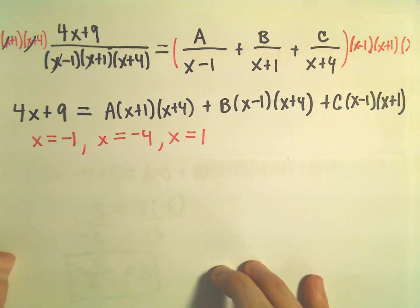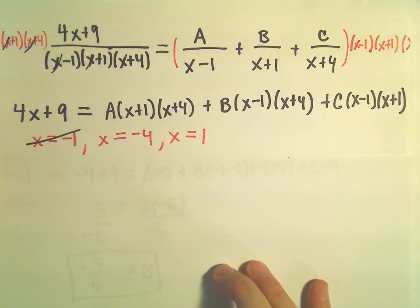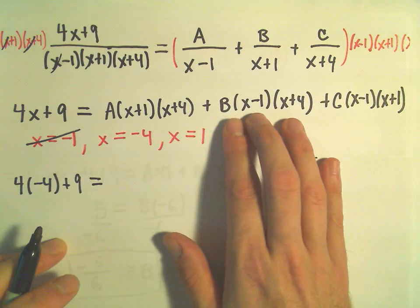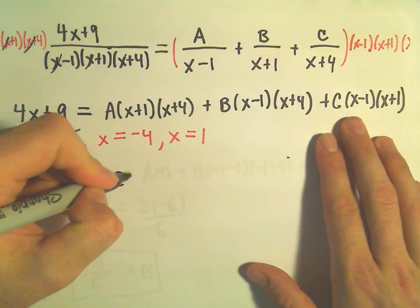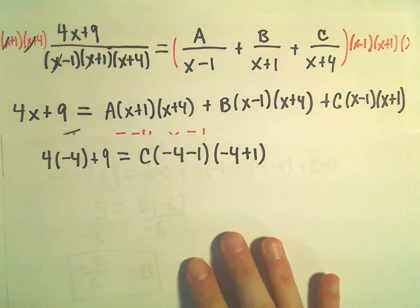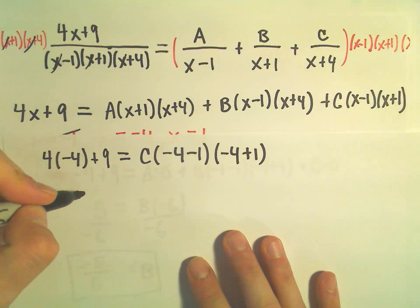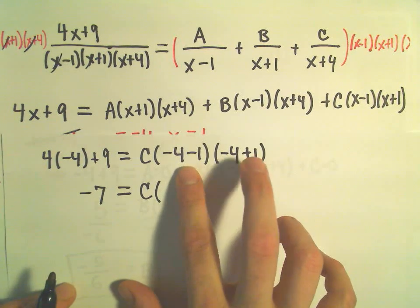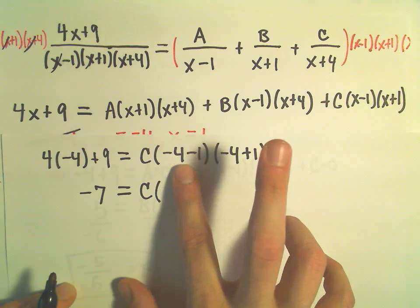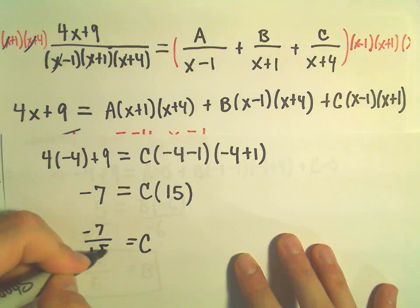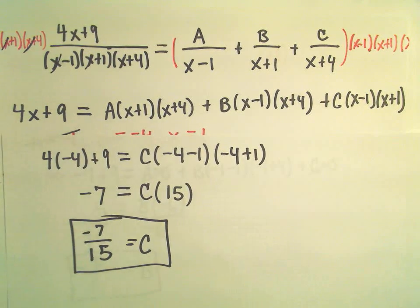Now let's plug in x equals negative 4. On the left side we get 4 times negative 4 plus 9. On the right side, plugging in negative 4 gives zero for both the A and B terms. We're left with C times (negative 4 minus 1)(negative 4 plus 1), which is C times negative 5 times negative 3, equaling positive 15C. So negative 16 plus 9 equals negative 7, giving us C equals negative 7 over 15.